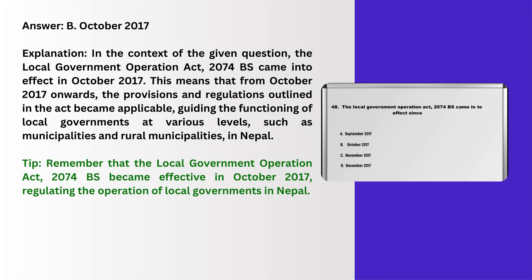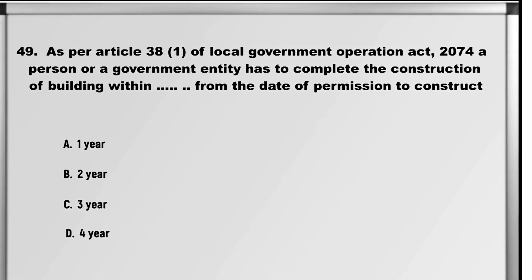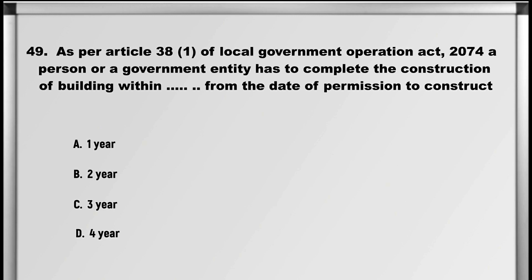Explanation: The local government operation act 2074 BS came into effect in October 2017. This means that from October 2017 onwards, the provisions and regulations outlined in the act became applicable, guiding the functioning of local governments at various levels such as municipalities and rural municipalities in Nepal. Tip: the local government operation act 2074 BS became effective in October 2017, regulating the operation of local governments in Nepal.